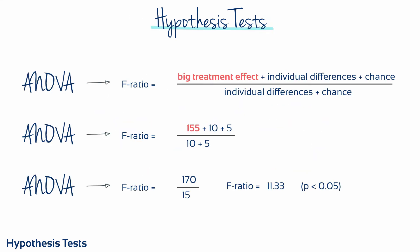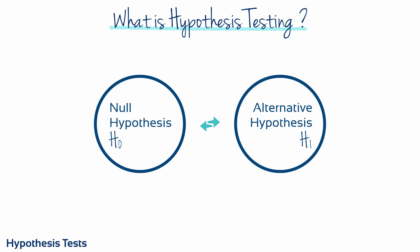If on the other hand your manipulation of the independent variable does have a genuine effect, let's say the treatment effect has a value of 155, and we keep the values of 10 and 5 for the individual differences and those due to chance, then the F-ratio would simplify down to 11.33. Again, we would use p-values to interpret this result in the conventional way and accept or fail to accept the null hypothesis accordingly.